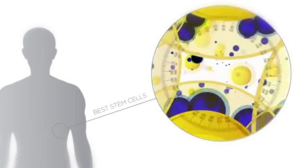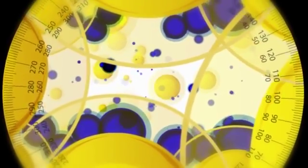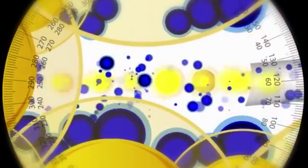The process begins with the search for the best stem cells in the human body. The stem cells are found within the body's fat layer. By using a sterile and specialized syringe, doctors extract a mixture of fatty tissue and a group of healthy stem cells.